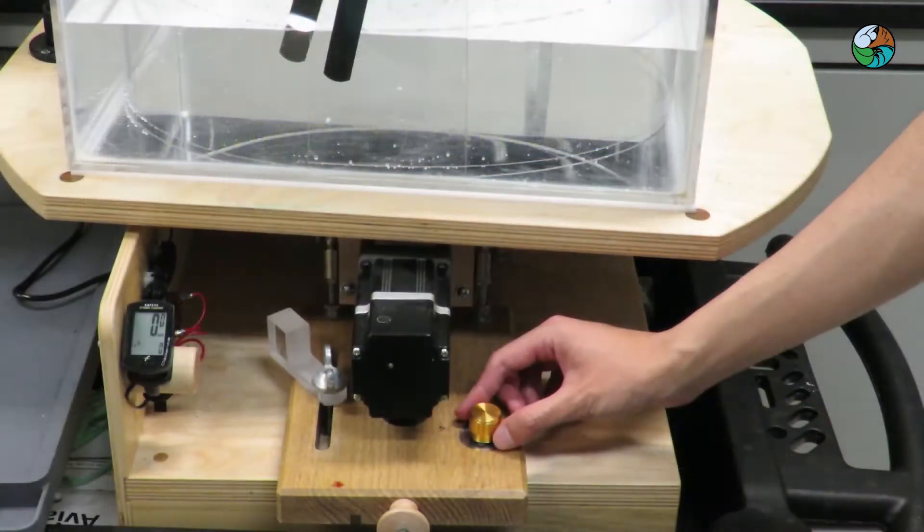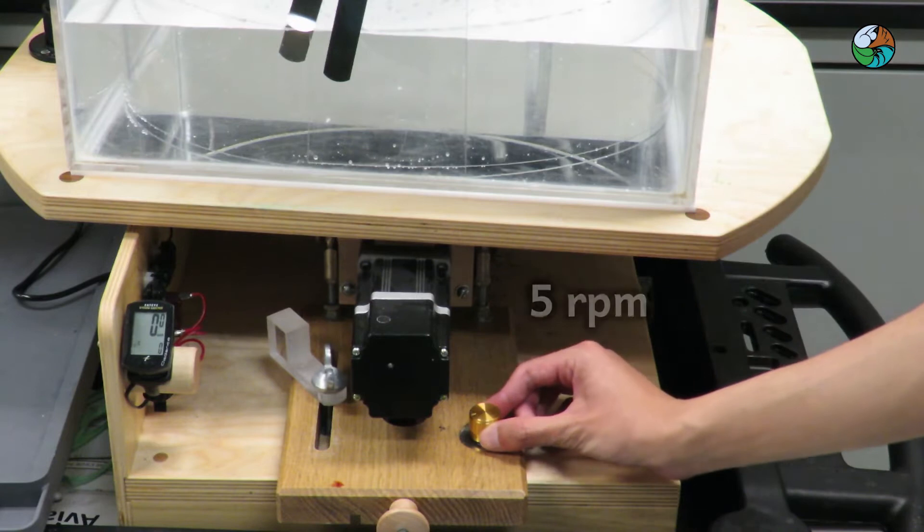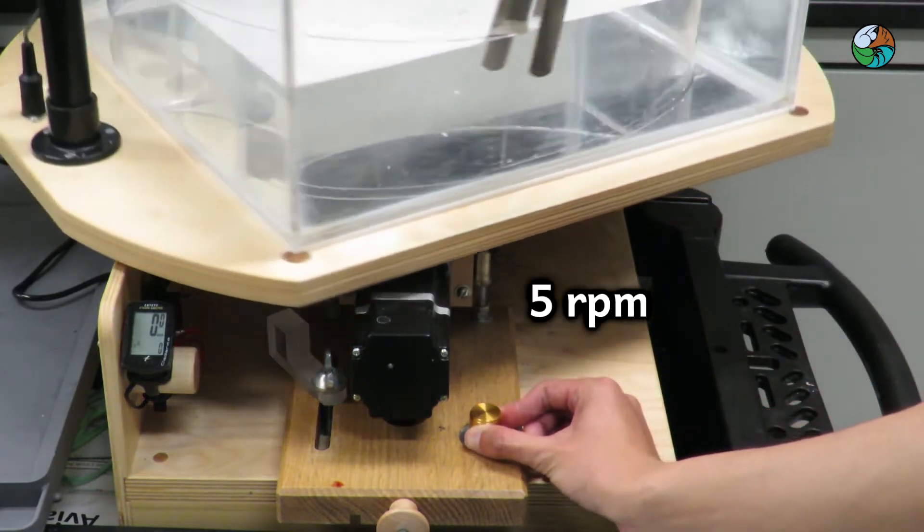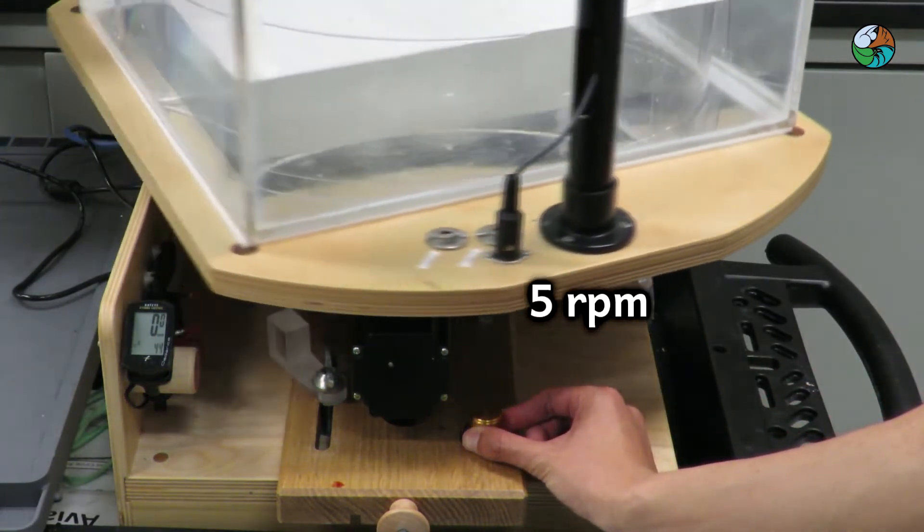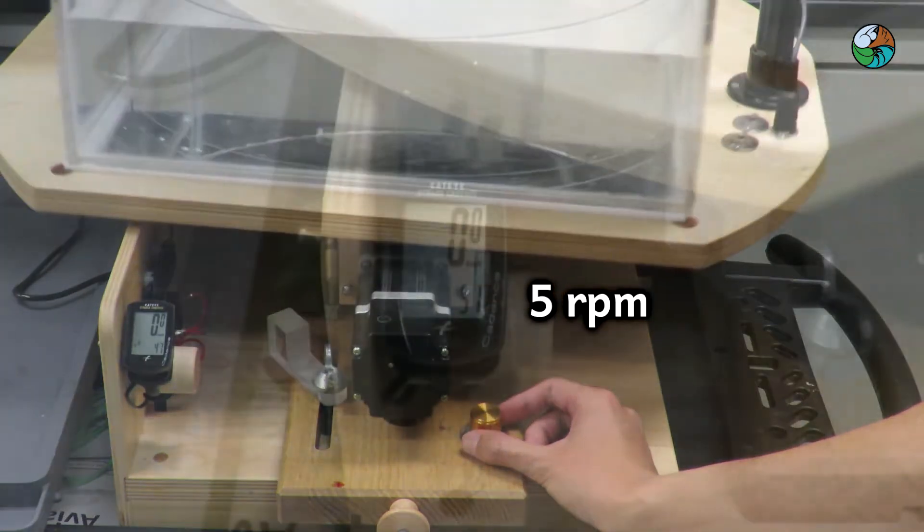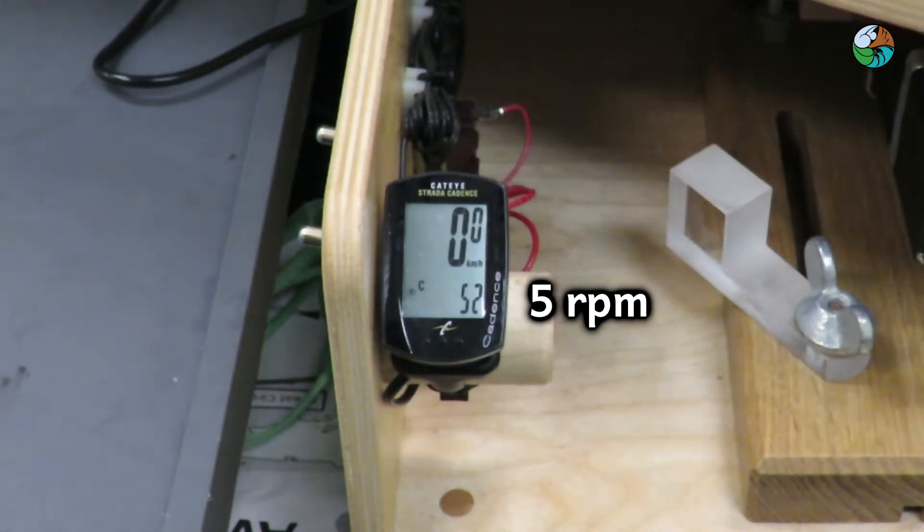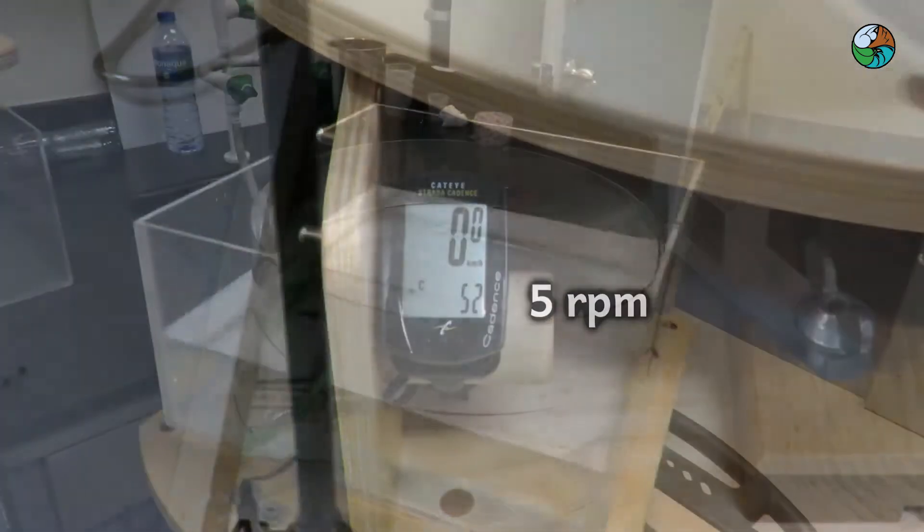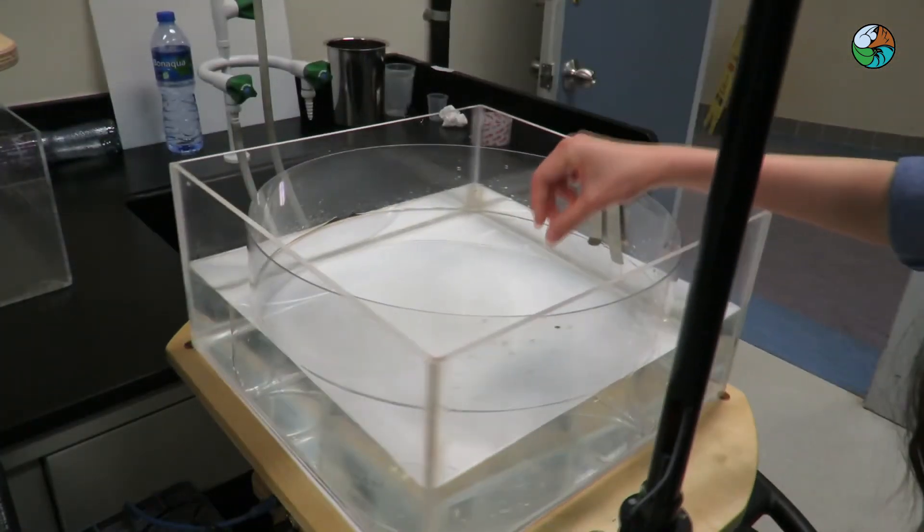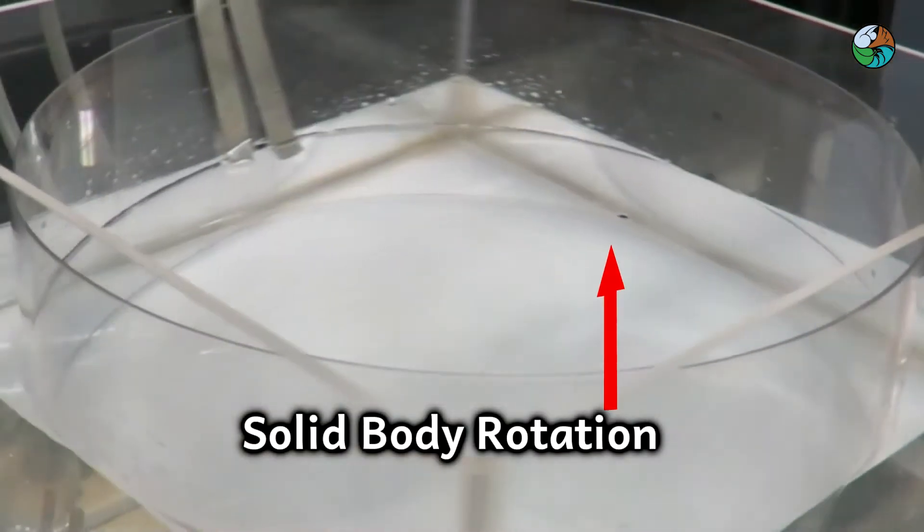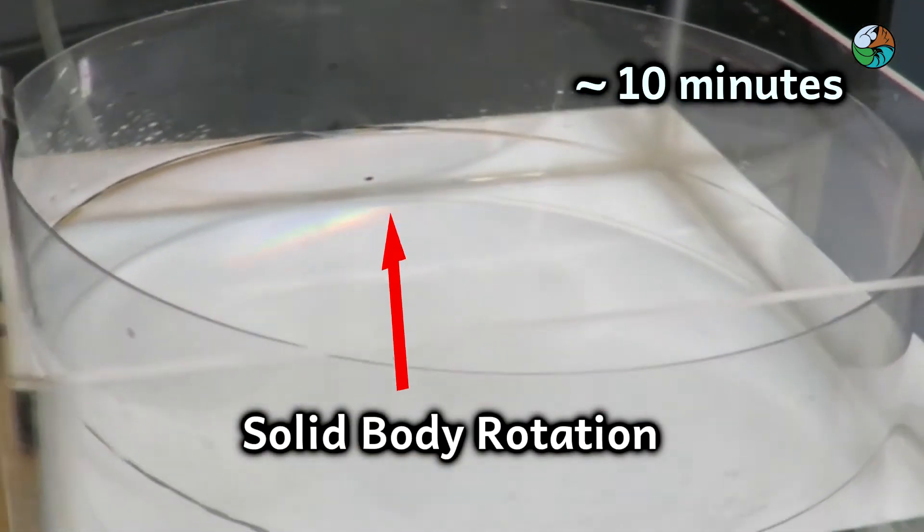Set the tank into rotation, say a speed of 5 revolutions per minute. Wait until the water is in solid body rotation. This may take 10 minutes or so.